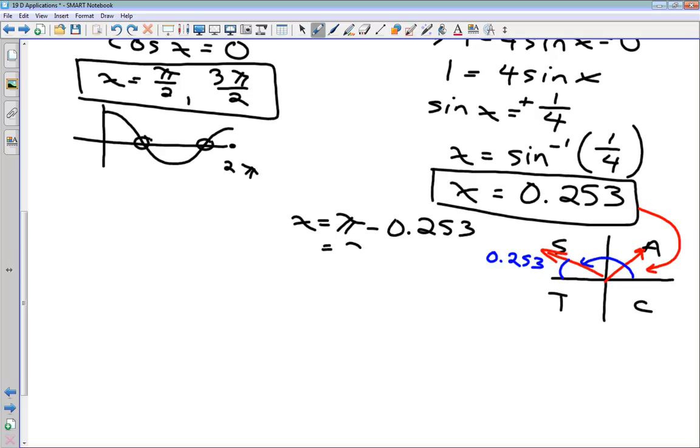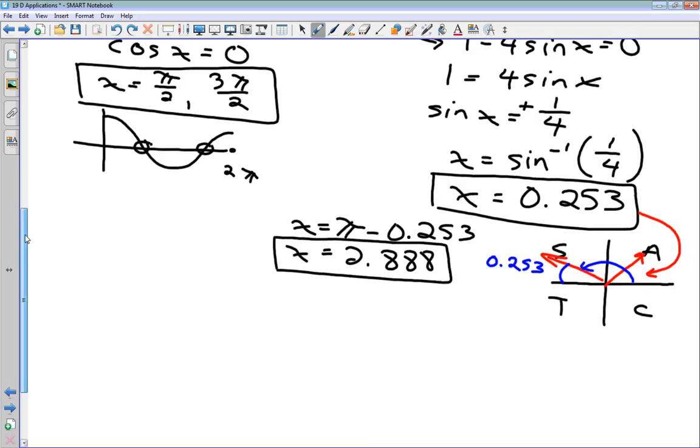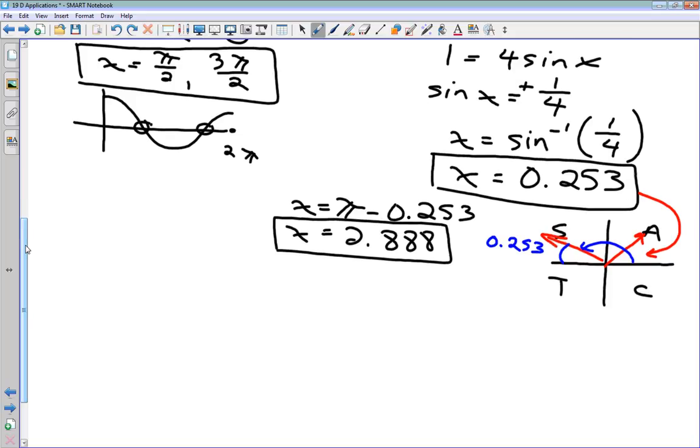So our second solution is π minus 0.253, which gets us something close to 2.888. So these are our four critical numbers. π over 2, 3π over 2, 2.53, and 2.888. We need to figure out whether these critical numbers represent local maxima or local minima.